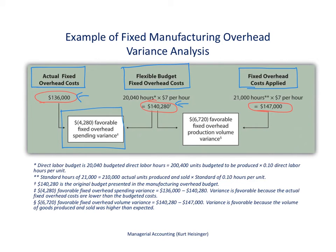Moving to the right, we see the production volume variance. It is the difference between the flexible budget of $140,280 and the fixed overhead costs applied to products of $147,000. The difference relates strictly to the number of units produced and sold, which was 210,000 units — versus the 200,400 units that were budgeted to be produced per the flexible budget. This variance is very descriptive: we produced more units than expected, so we applied more fixed overhead than was in the flexible budget, resulting in a $6,720 favorable fixed overhead production volume variance.